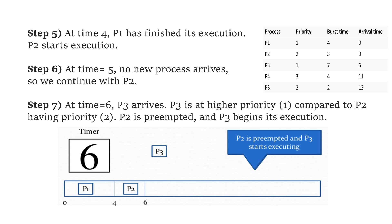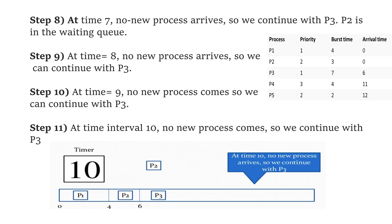So P2 starts its execution at time 4. At time 5, no new process arrives, so we continue with P2. At time 6, P3 arrives. But P3 has higher priority compared to P2, so P2 is preempted at time 6 and P3 begins its execution.